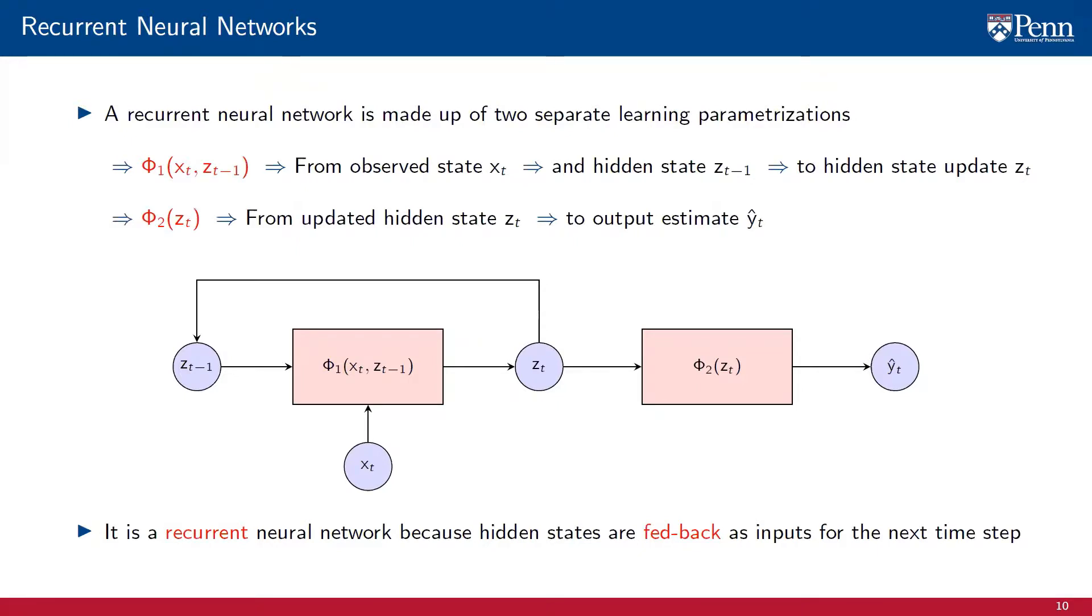By repeatedly updating the hidden state with each new data sample, the RNN creates an implicit mapping from the history of the process to the current hidden state, without having to store and process all the samples it has seen so far.